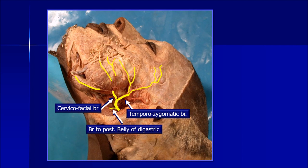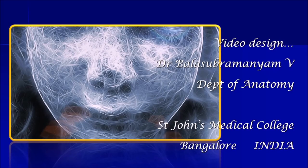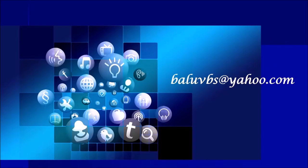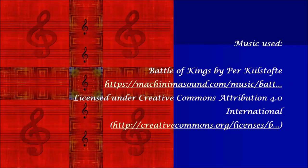The next few steps show the continuity of these nerves with the parent stem. That is the completion — see that is how the marginal mandibular joins.